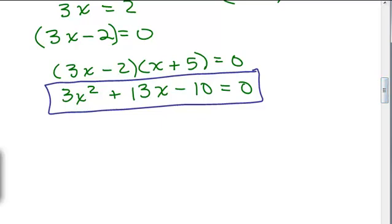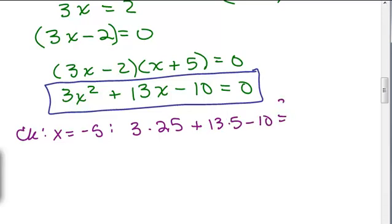Let's plug in negative 5 for x. So I'd have 3 times, what's negative 5 squared? Negative 5 times negative 5 is 25, plus 13 times negative 5. So that's plus negative 65 minus 10 equals 0, and that's 0.